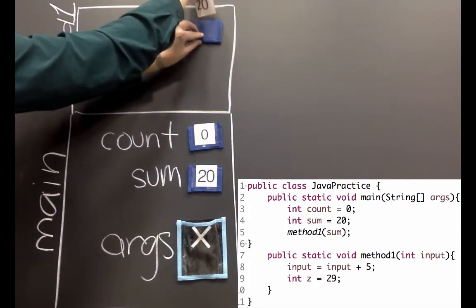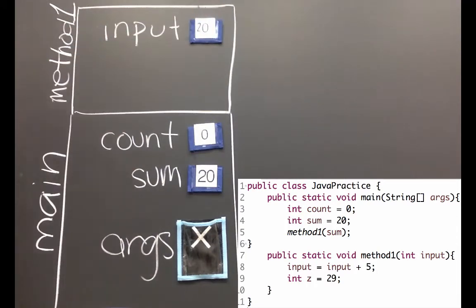The next line in method one changes input by adding five, so now input will be 25.